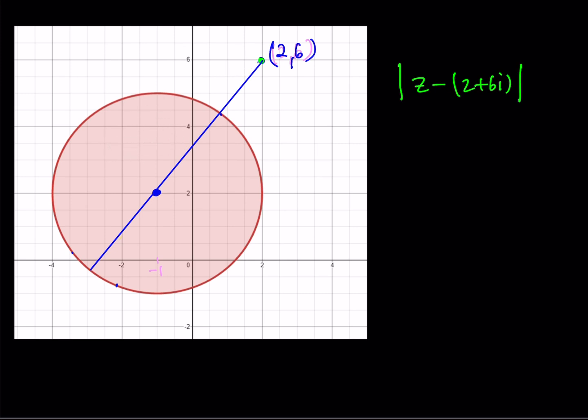This is my fixed point, and between this fixed point and any point inside the circle, I want to find the maximum distance. That point which gives us the maximum distance is going to be on the circle, all the way on the other side of this segment — on opposite ends, basically.